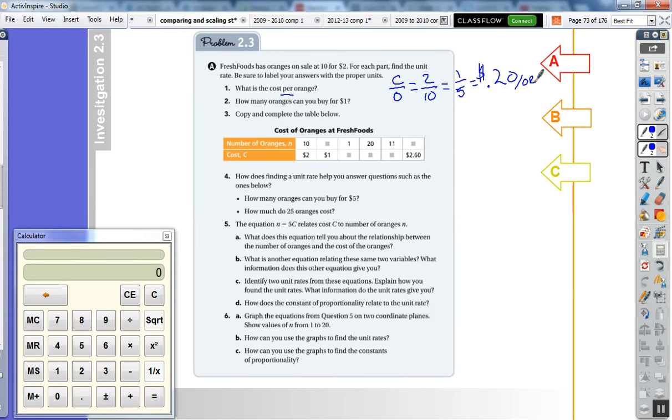How many oranges can you buy for $1? This is asking oranges per dollar, so we're going to flip it. We're going to have 10 oranges for $2, so that means for $1 you can get five oranges.